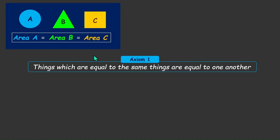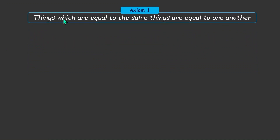We saw that the area of the circle was equal to the area of the triangle, and the area of the triangle was equal to the area of the square. So both the area of the square and the area of the circle were equal to the area of the triangle, which means the area of the circle is also equal to the area of the square. Now let's think about each word in this axiom carefully — specifically the word 'things' and 'same things.'